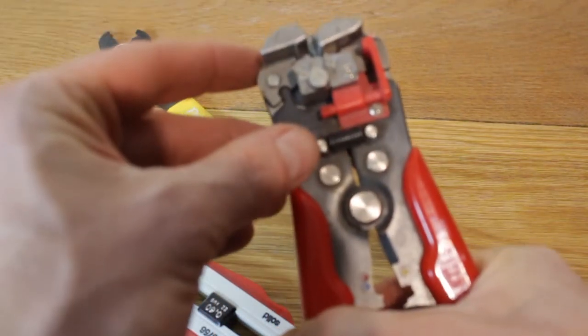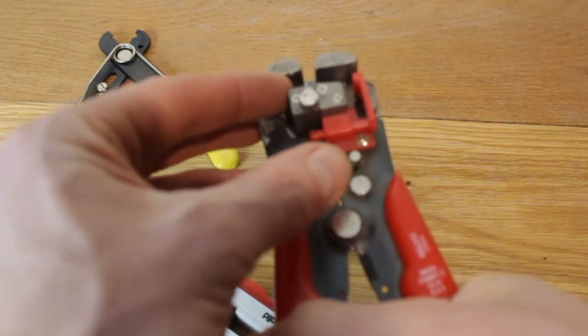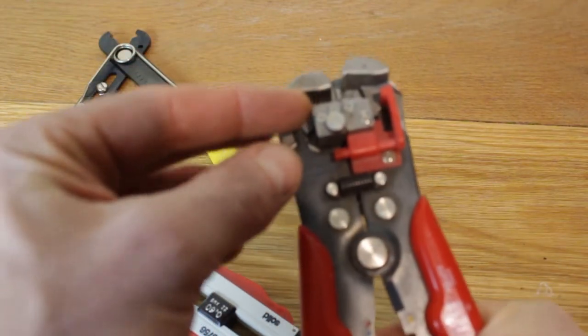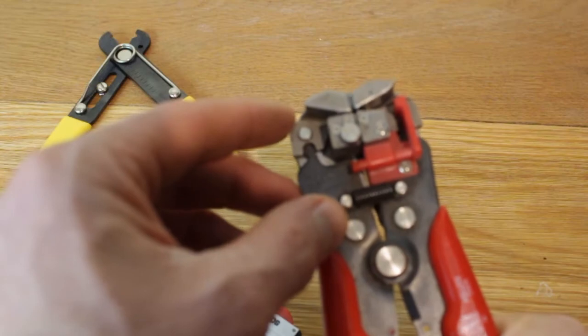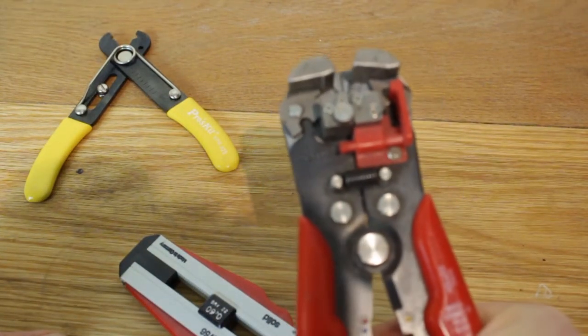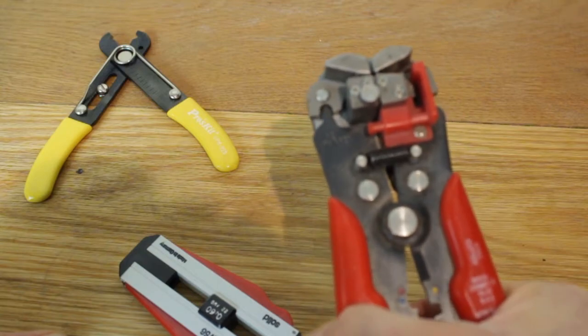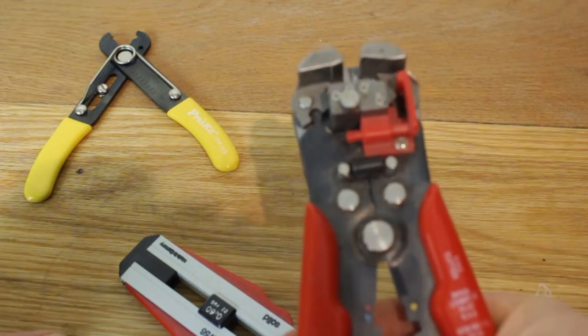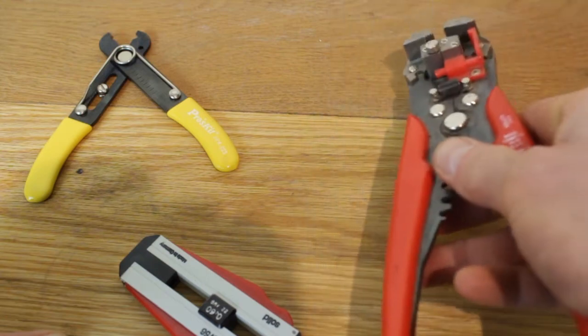The only thing is with these is because it's got these teeth here, it can actually grip and leave a mark on the wire. So if you're fussed about that then you maybe won't like these. So it's about just getting the settings right for it though. If I'm stripping a lot of the tri-rated wire I tend to use these.